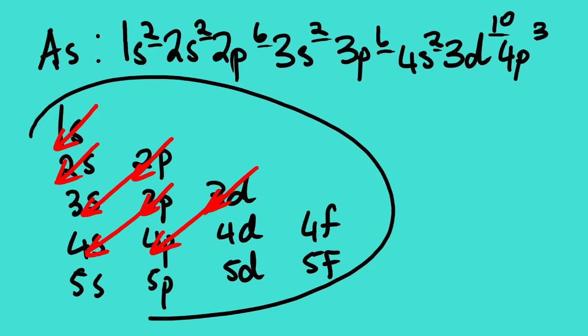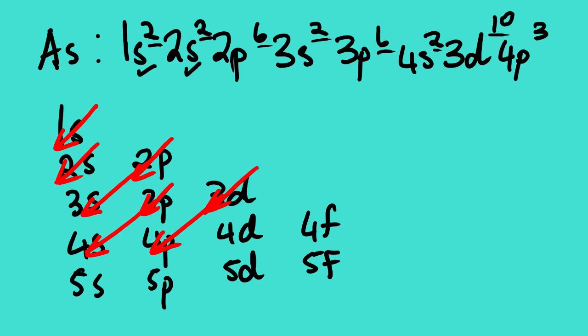You can see that this diagram actually assists us in terms of order: 1s, 2s, 2p, 3s, 3p, 4s, 3d, 4p. Once you master this diagram, it will be simple for you to actually know the order of how to write the SP notation.